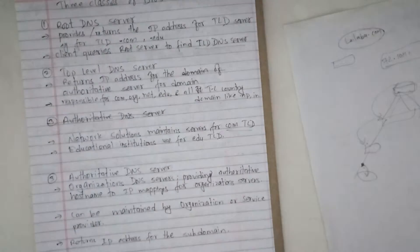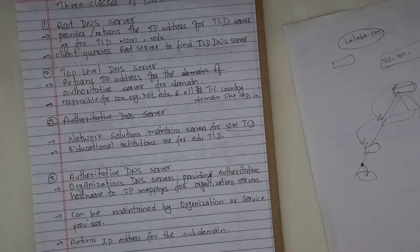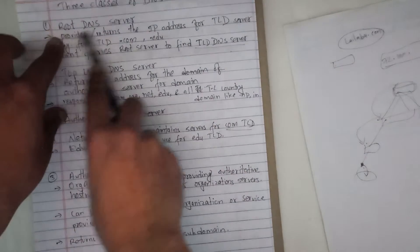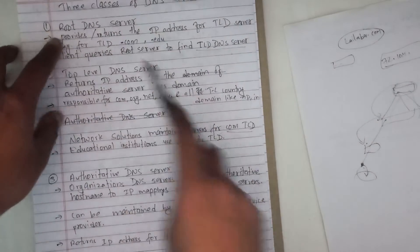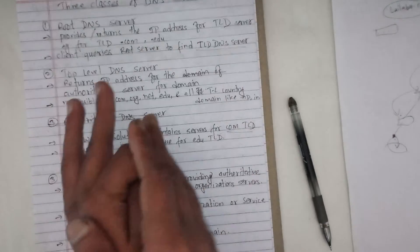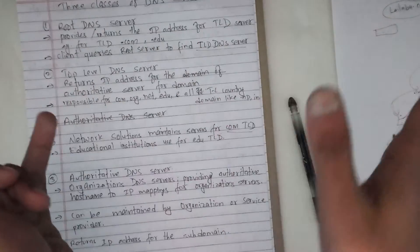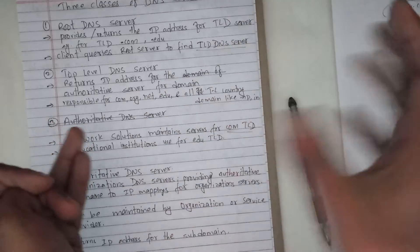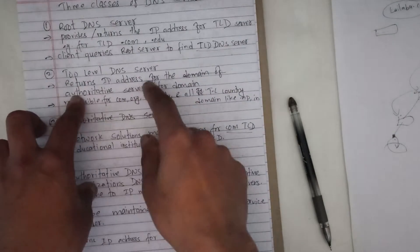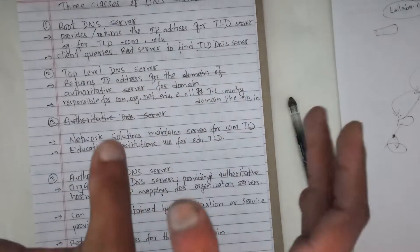DNS queries can be recursive and iterative. The root DNS server handles queries for top-level domains like .com, .in, and passes them down to the top-level DNS server.